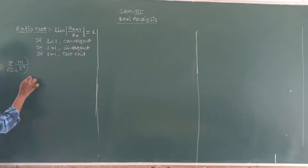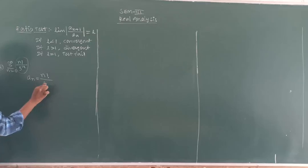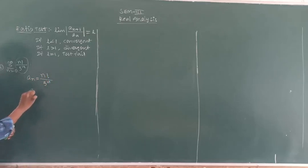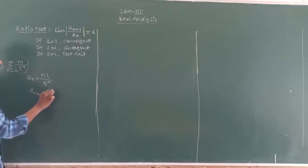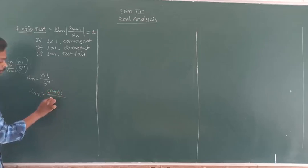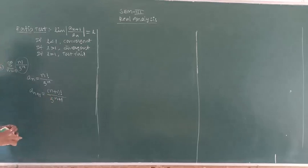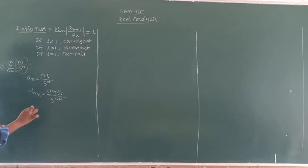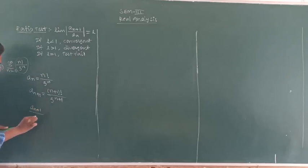We have a_n equals n factorial by 5^n. And a_{n+1} equals n plus 1 factorial by 5^(n+1). By ratio test, we should compute a_{n+1} by a_n.